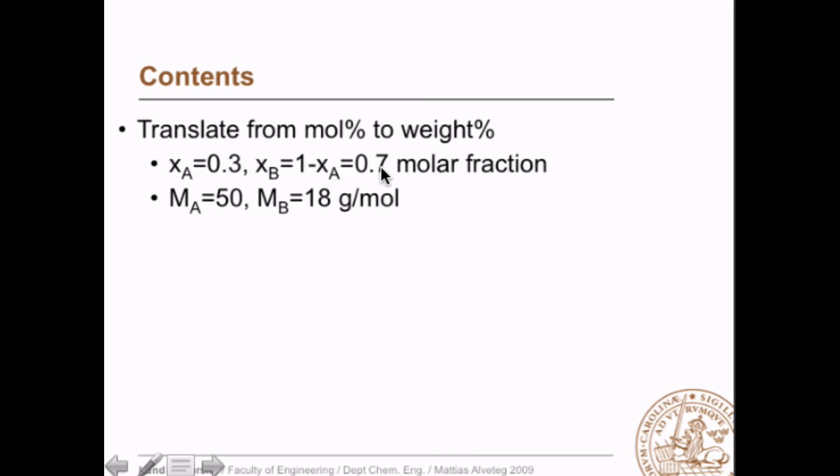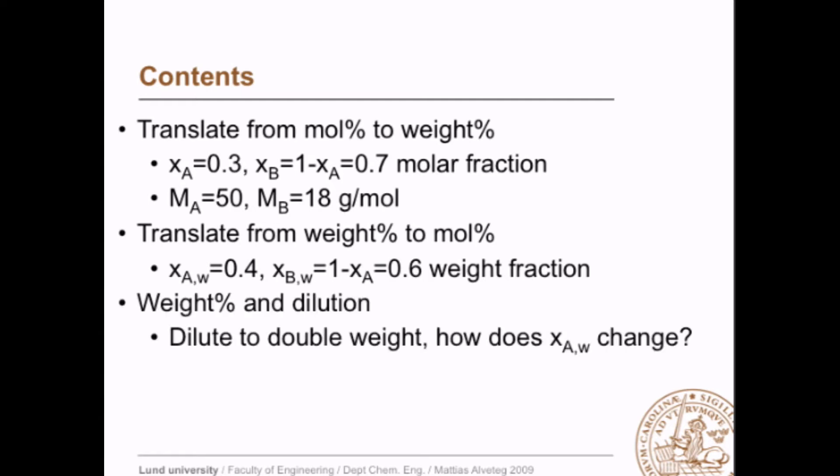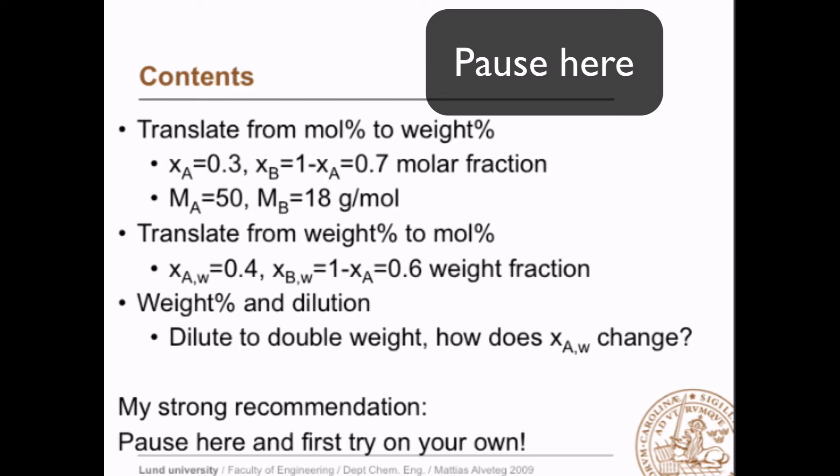We are assuming a binary system and we have the molar masses given as 50 and 18 g per mole respectively. The second example is translating from weight percent to mole percent if we have 40 weight percent of A, and the last example is how the weight fraction changes when we dilute to double weight. My strong recommendation here is that you pause and try first on your own before you continue.